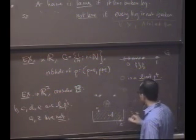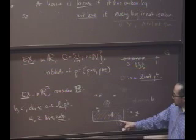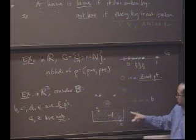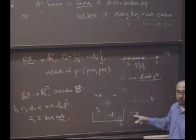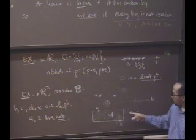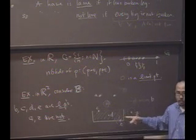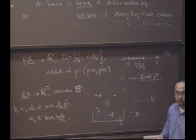So all you have to do, unlike the case of showing something is a limit point, to show something isn't a limit point, you just need to find one ball that misses points of E, all the points of E other than this point itself, possibly.